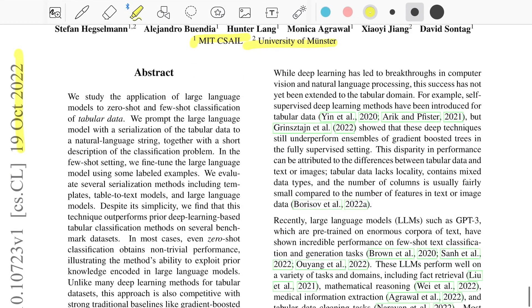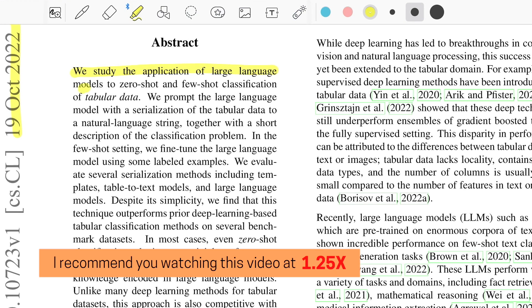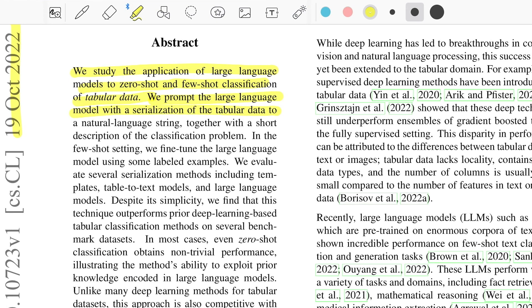Let's start with the abstract. They say we study the application of large language models to zero-shot and few-shot classification on tabular data. We prompt the large language models with a serialization of the tabular data to a natural language string together with a short description of the classification problem. As we've seen, typically when dealing with tabular data and classification problems, tree-based algorithms usually perform much better. But what this paper talks about is: can we use existing large language models for really good classification, particularly in the zero-shot setting when we have no data for the new class, or the few-shot setting with just a bit of data for each class?